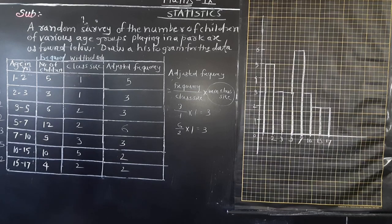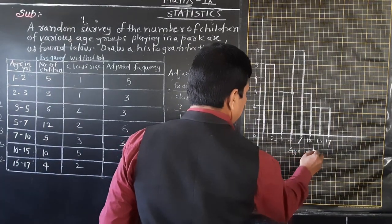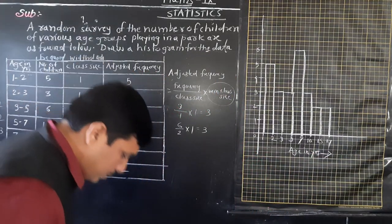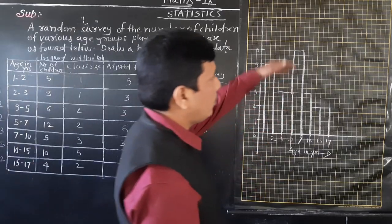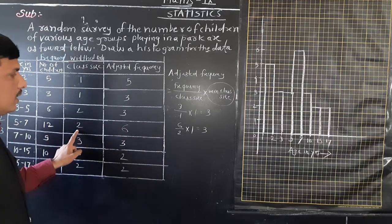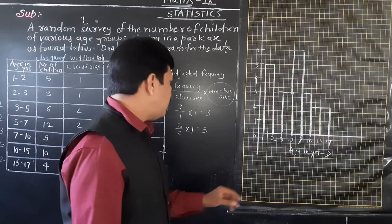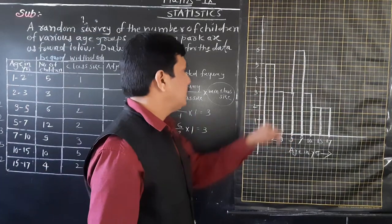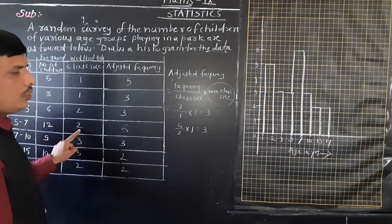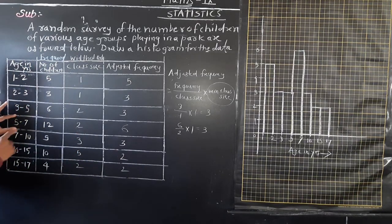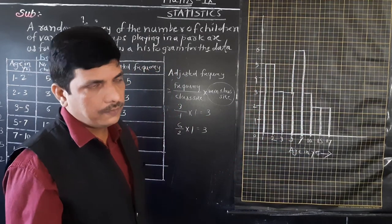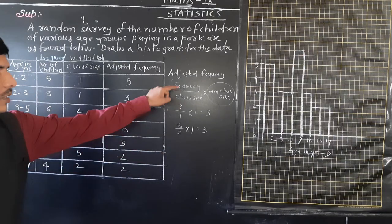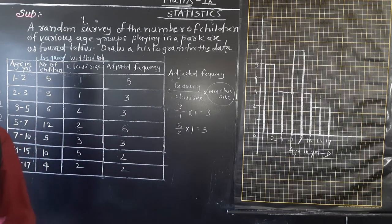So this way we need to do some adjustment. Here we write age in years on the x-axis and number of children on the y-axis. The height of the rectangle we have modified. For 5 to 7: the given frequency was 12, but class size was 2 and minimum class size was 1, so in proportion to the rectangle area we adjusted it to 6. Solve such types of examples in this way, using adjusted frequency with the help of the formula.